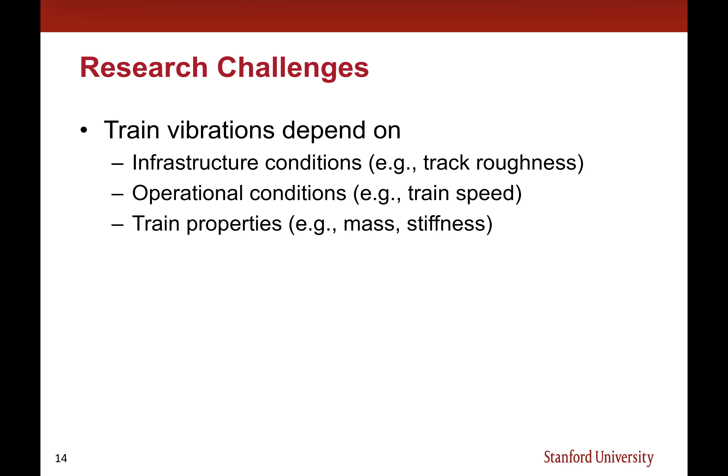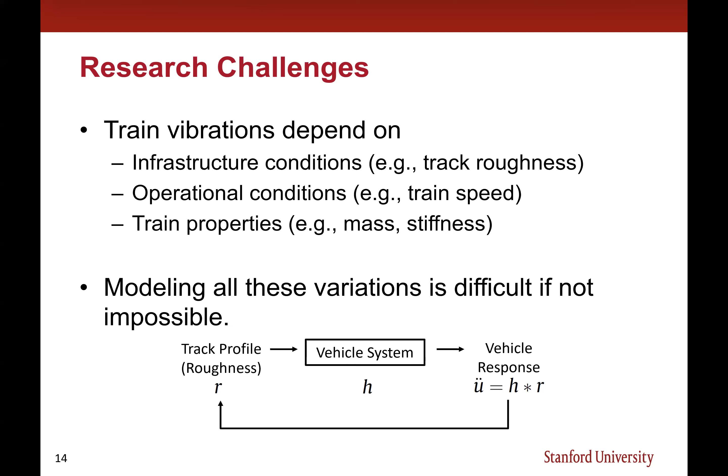Even if track condition is exactly the same, different train speeds produce different vibration responses. The train vibration response also depends on train properties like mass or stiffness, which may change depending on whether it's rush hour or not, or as the suspension system wears out over time. Given all these different factors affecting the response, modeling all these variation variables is very difficult — there are too many unknowns, making it a highly ill-posed inverse problem.